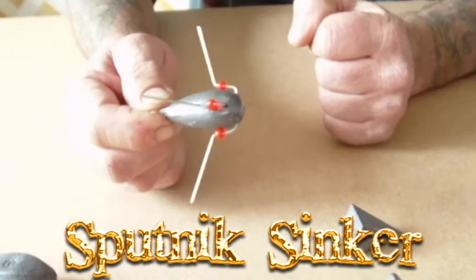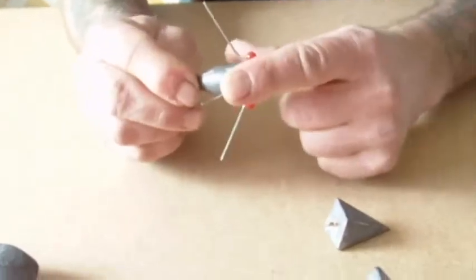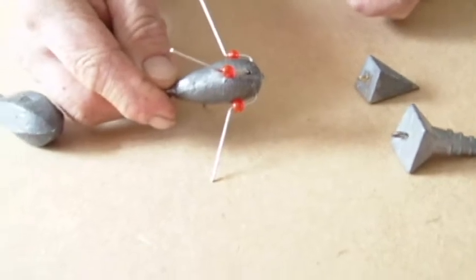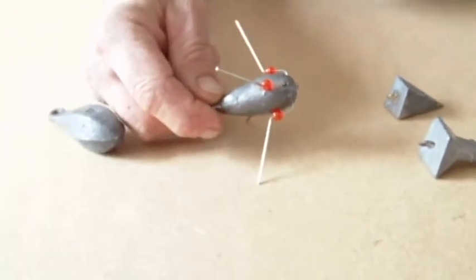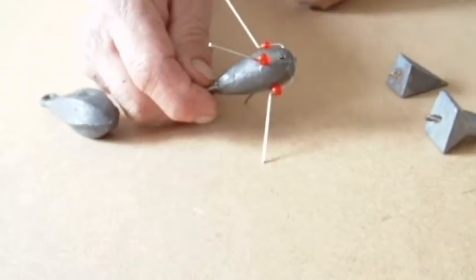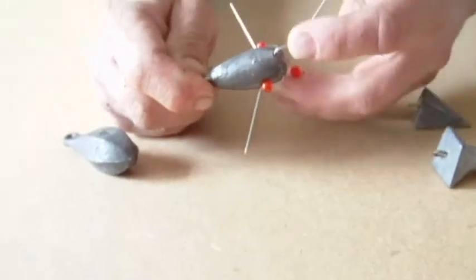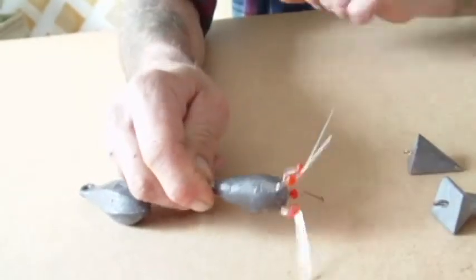These are designed with steel rods to actually dig into the sand. When the fish picks up your bait and you go to set the hook, these steel rods bend back, which enables you to release the weight and pull it out of the sand.